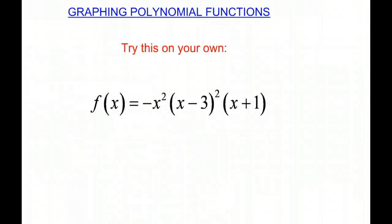Now I'd like you to try this equation on your own: f of x equals negative x squared times x minus 3 squared times x plus 1. Remember that you need to find the end behavior, the degree, the zeros, the y-intercepts, all of those things to help you graph. Thank you very much, and good luck.